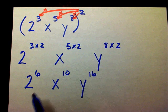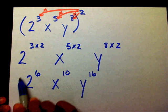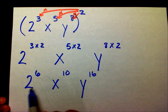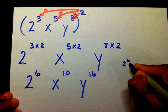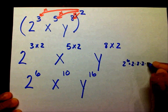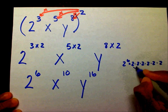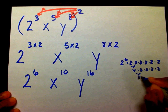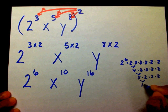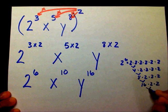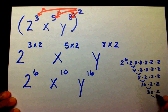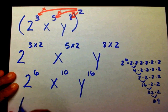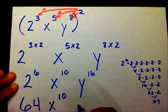Now, we can simplify this even more. 2 to the 6th power equals 2 times 2 times 2 times 2 times 2 times 2. That gives us 4, then 8, then 16, then 32, then 64. So we can simplify this by writing 64 x to the 10th y to the 16th.